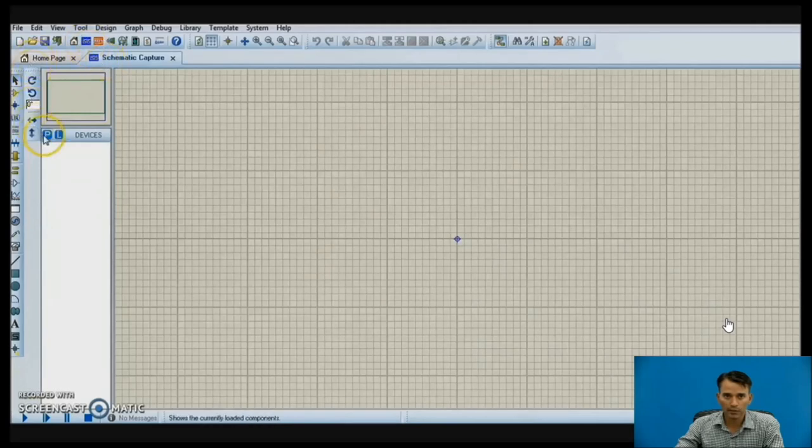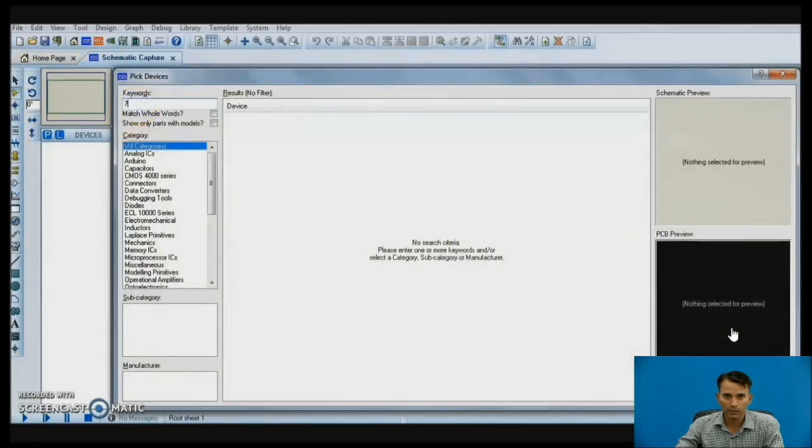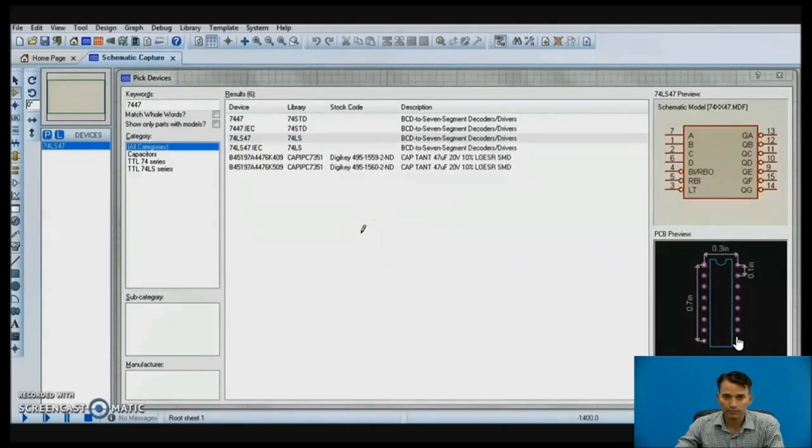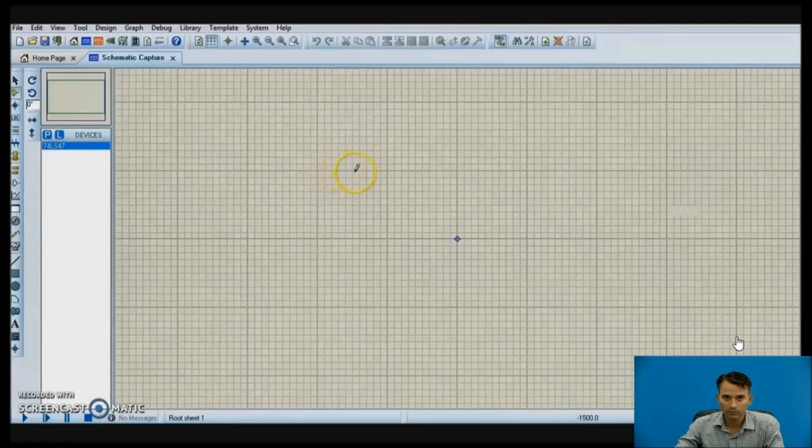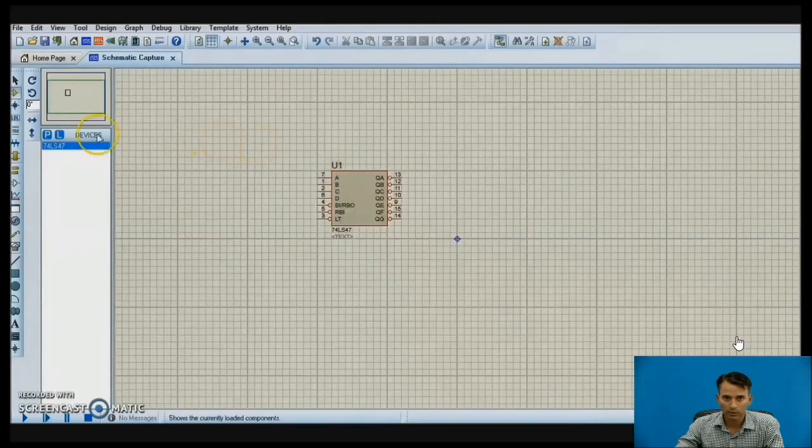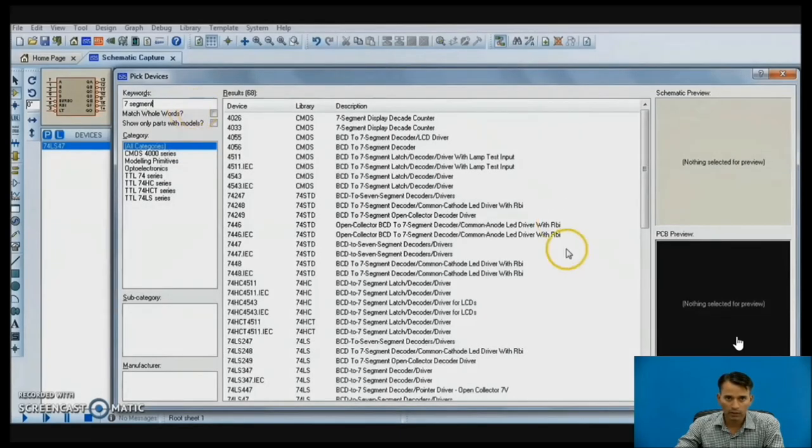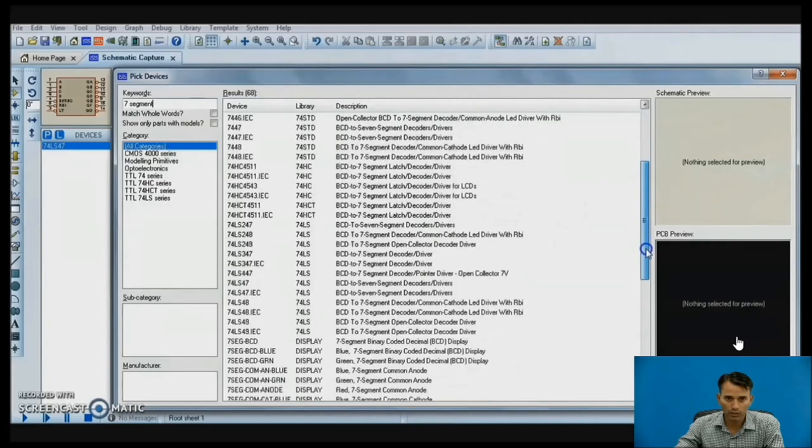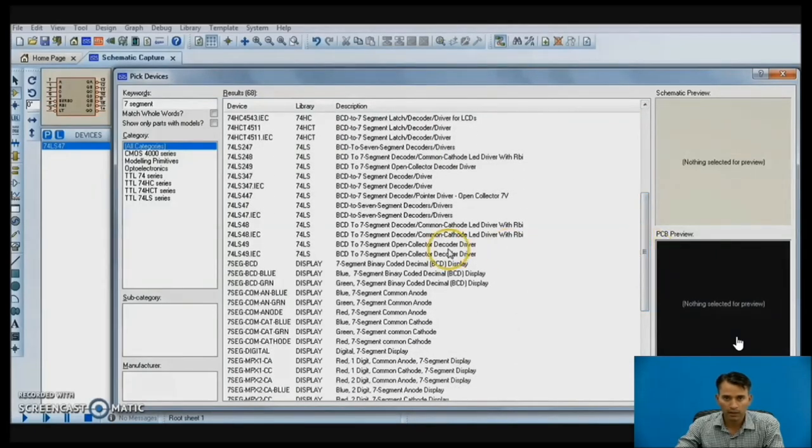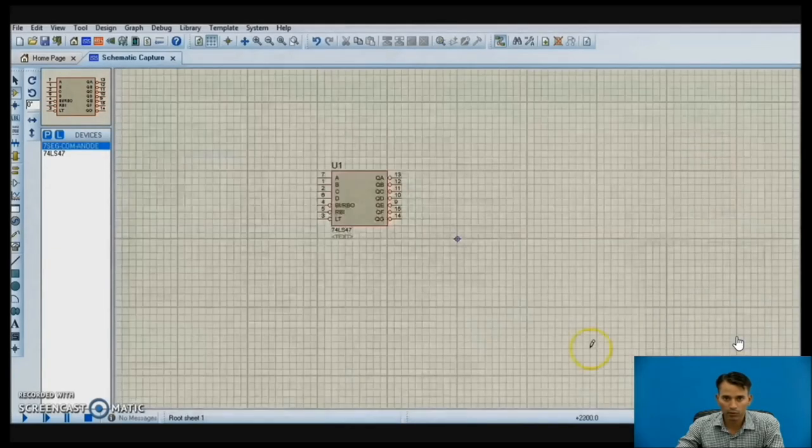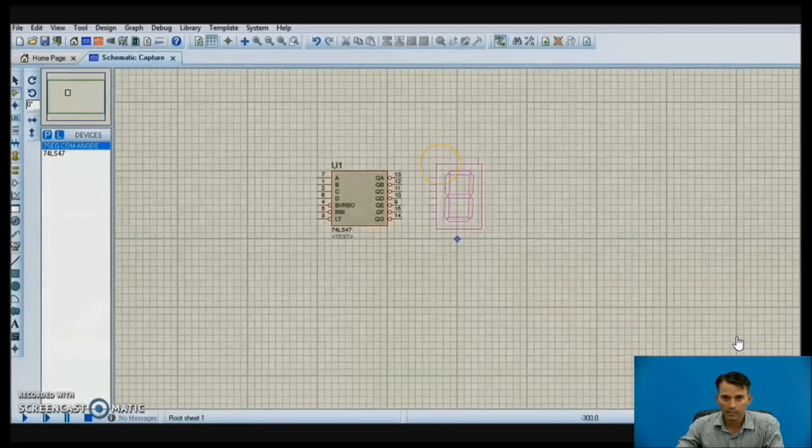Choosing schematic capture, then placing proper components. Here we require 7447 which is a decoder or driver IC. Let us place it at a proper position. Let us choose another component. We require a 7-segment display which is a common anode, so we have to choose a common anode 7-segment display. You can choose a particular color, here we are choosing red color. Red 7-segment common anode. Let us place it at a proper position.